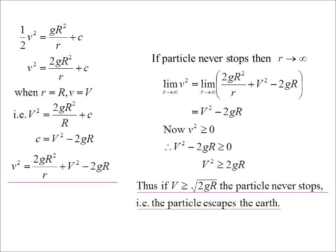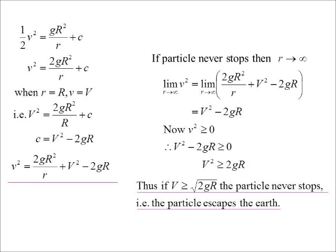So therefore, if capital V is greater than or equal to the square root of 2gR, my particle is never going to stop. In other words, the particle escapes the Earth. Thus, that is my escape velocity, which they wanted me to work out.